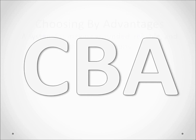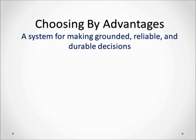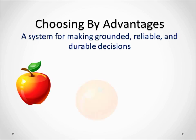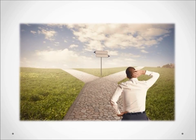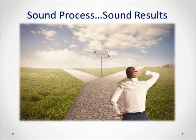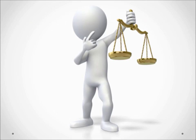Choosing By Advantages, or CBA, is a best-known practice in the lean construction community for making good, durable decisions. Over the next few minutes we will look at how CBA works and demonstrate how you really can compare apples, oranges, and even bananas in making decisions. Why is having the right decision-making process important? Because we have to live with the decisions long after we make them, and how a decision is made more often than not has a significant impact on the actual outcome, so using a sound process is essential to achieving sound results.